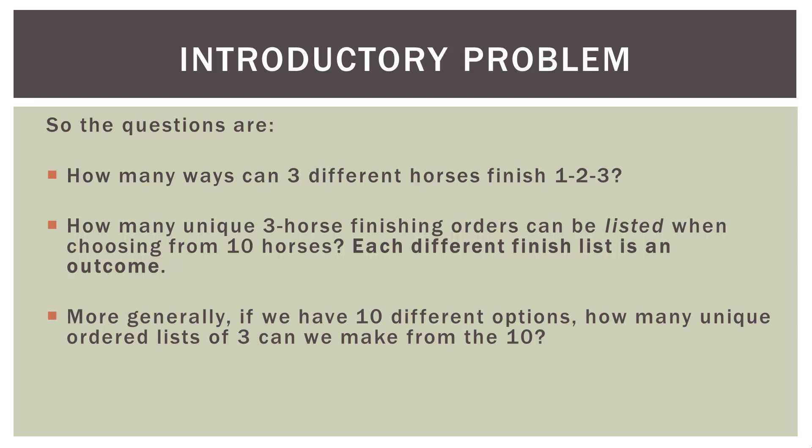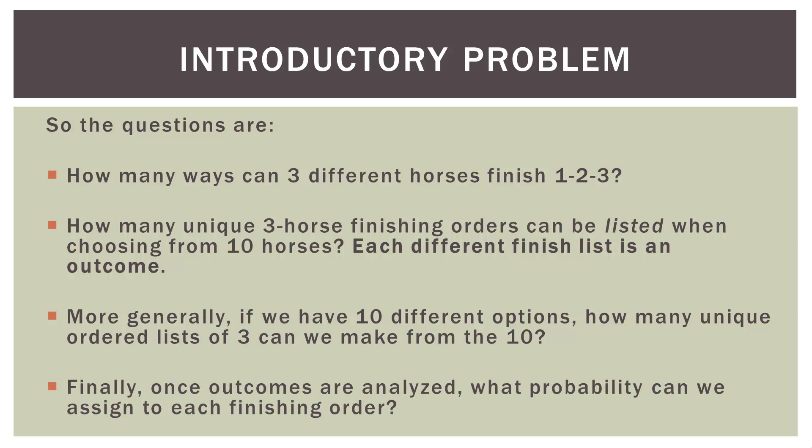More generally, if we have 10 different options to choose from, how many unique ordered lists of three can we make from the 10? The answer is 720. And finally, once the outcomes are analyzed, what probability can we assign to each finishing order? In this example there are 720 possible unique 1-2-3 finishes out of 10 horses, so if you bet on just one of them, the probability of winning is 1 out of 720.